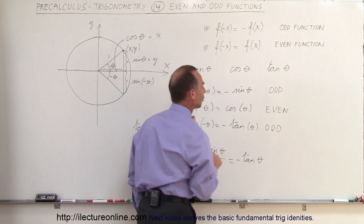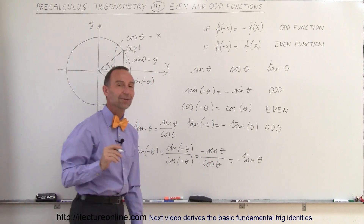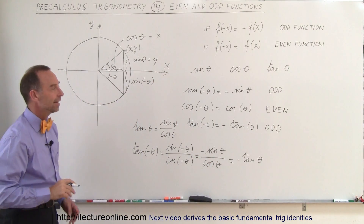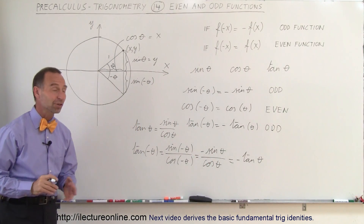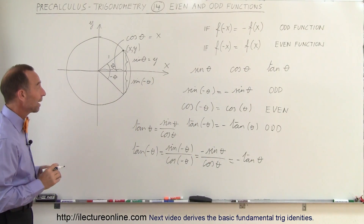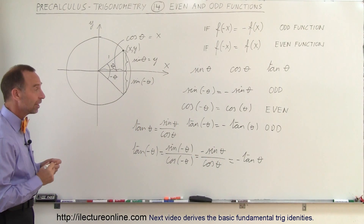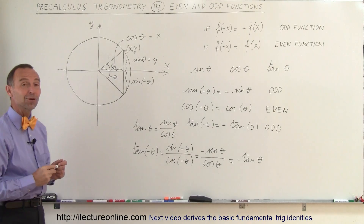So both the sine and the tangent are odd functions, and the cosine is an even function. Simply by inspection we can see that that is so.